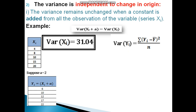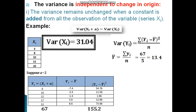The variance formula is: summation of (yi minus y-bar) squared divided by n. We find y-bar: the sum of yi equals 67, divided by 5, so y-bar equals 13.4. Computing (yi minus y-bar) for each value gives a sum of squared deviations of 155.2. Variance equals 155.2 divided by 5, which equals 31.04.